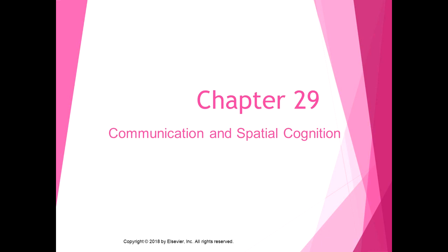Chapter 29 is the last chapter in the book — pretty exciting! We're going to talk about communication and spatial cognitions, divided into two sections. We briefly started talking in the cerebral cortex chapter about aphasia, Broca's aphasia, and some other areas, and we're going to talk more about it in this chapter.